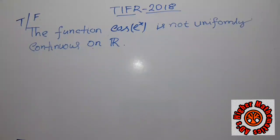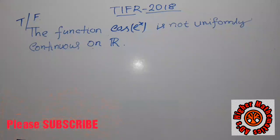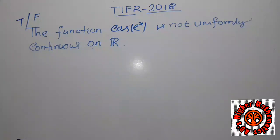Welcome friends, welcome to Edith Harrow Mathematics. Today we will discuss a problem which is asked in TIFR 2018. The problem is: the function cos(eˣ) is not uniformly continuous on ℝ.